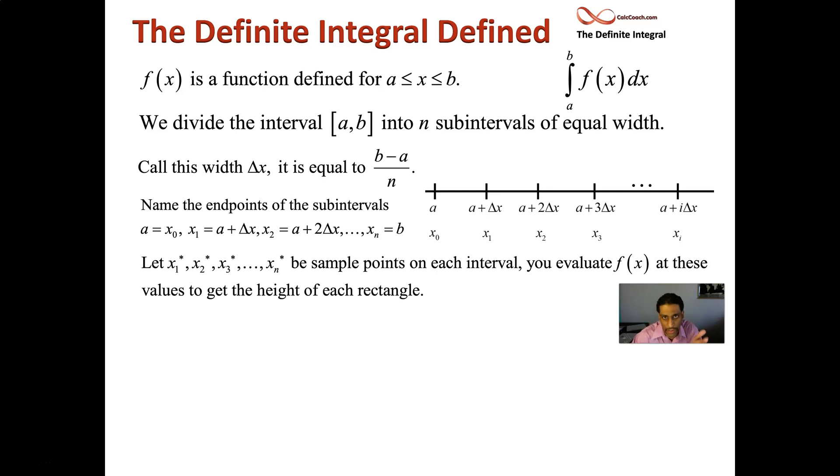And so to get the height, what we do is we pick a place in each of the intervals and we evaluate the function at that place. So what we call this place generically is x i star. So x one star, x two star, x three star, and we'll end at x n star. Sometimes it's defined for you as using the left end point, using the right end point, using the midpoint. Generically though, we'll just say someplace x i star is where we're going to go and evaluate the function and that's going to give you the height of the rectangle.